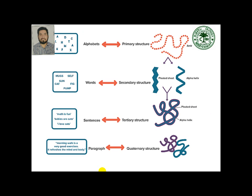The primary structure is like the language of the protein written in 20 alphabets — just like English has 26 alphabets. From alphabets we make words like mug, self, sun, cat, fig. The secondary structures act as words in terms of vocabulary. Then the sentence stage corresponds to the tertiary structure — for example, 'math is fun' or 'babies are cute'. If there is more than one polypeptide chain, it forms a quaternary structure, analogous to a paragraph — like 'morning walk is a very good exercise, it refreshes the mind and body.'